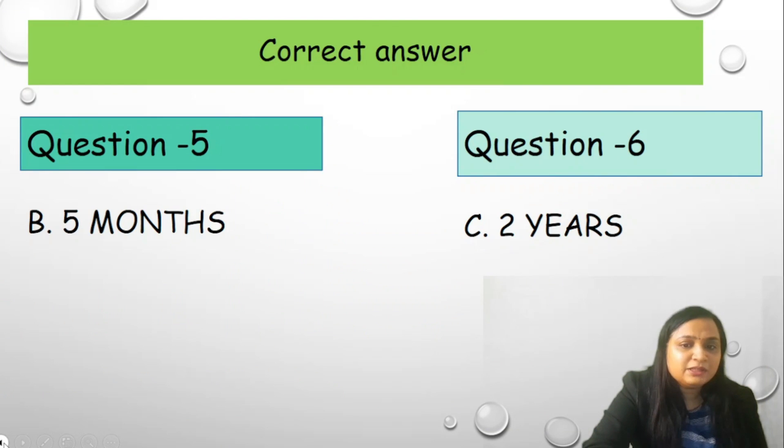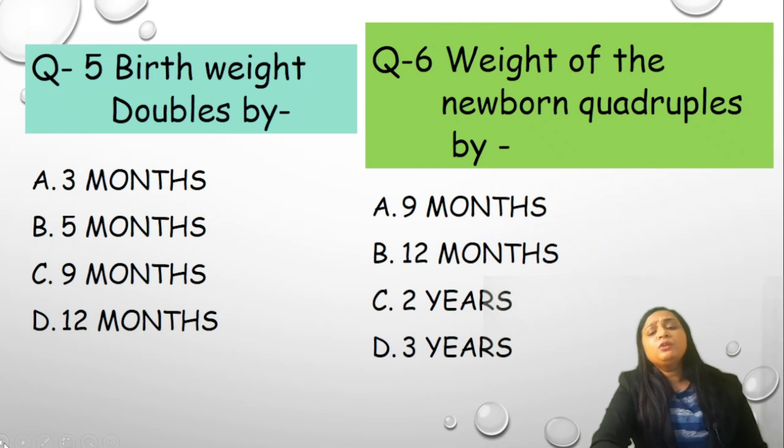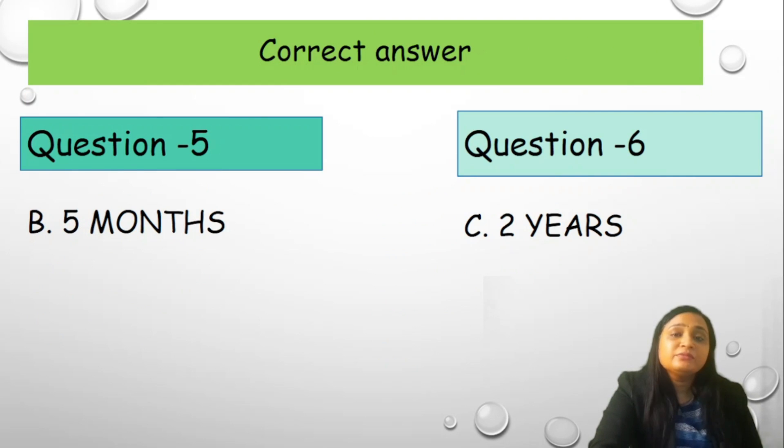Question number 6 was weight of the newborn quadruples by - your options are A 9 months, B 12 months, C 2 years, or D 3 years. What is the correct answer? I have already told that it quadruples by the age of 2 years. Correct answer is 2 years.